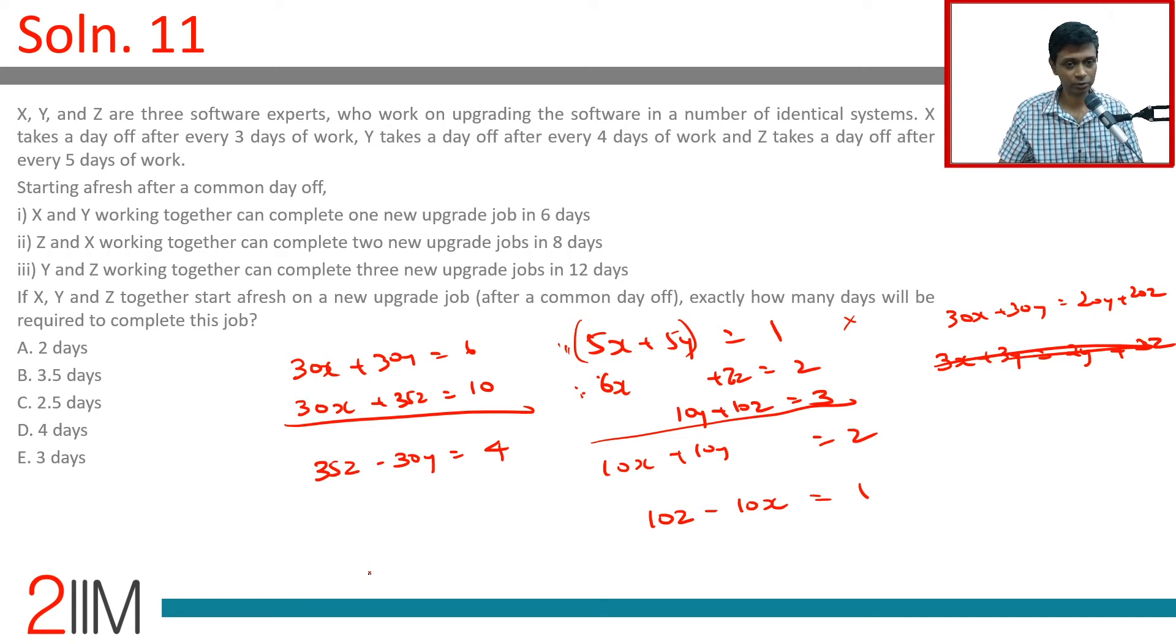Let's do this the brute force way. 35 Z minus 30 Y is four. 10 Z minus 10 X is one. We've eliminated X in one equation, we eliminated Y in one. We can eliminate Z, get something linking X and Y, then substitute one in the other. Or we can get Y in terms of Z: 35 Z minus 4 is 30 Y.